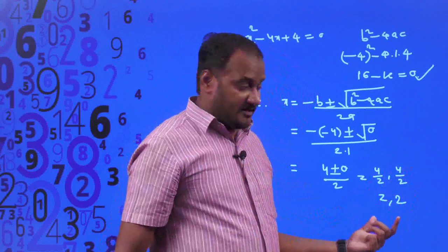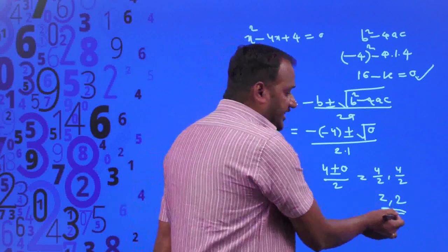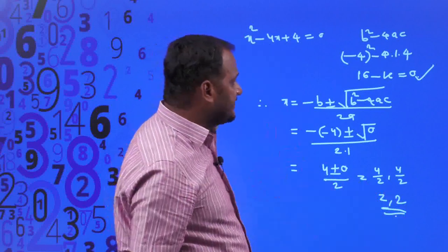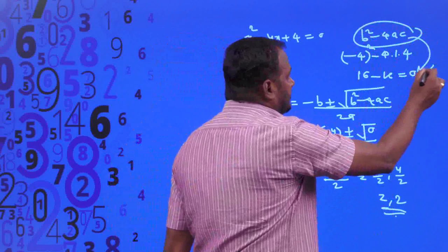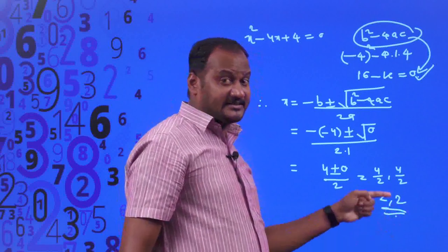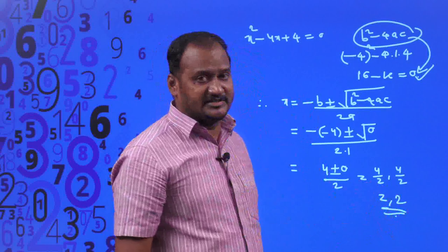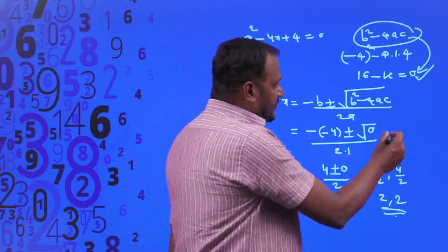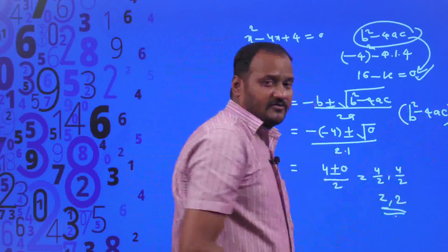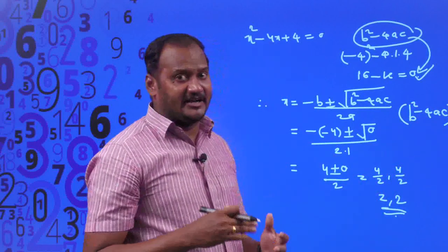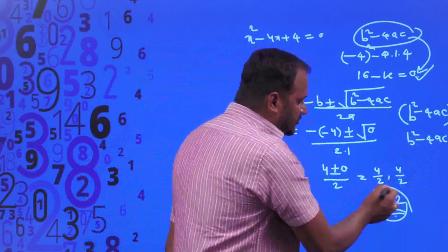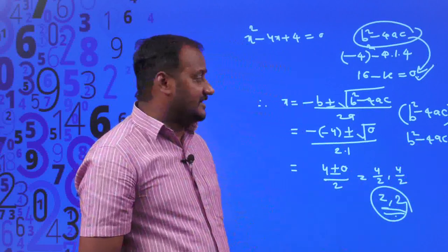The two roots 2 and 2 are real numbers and they are equal. So we can conclude: if the value of B² - 4AC is equal to 0, then the roots are real as well as equal. So with the first example giving B² - 4AC > 0 (real and unequal) and this example giving B² - 4AC = 0 (real and equal), there is one more case remaining.